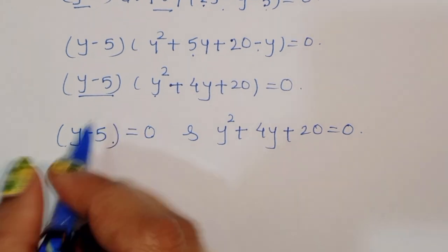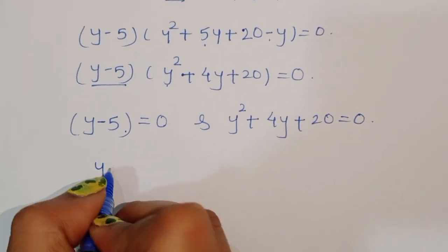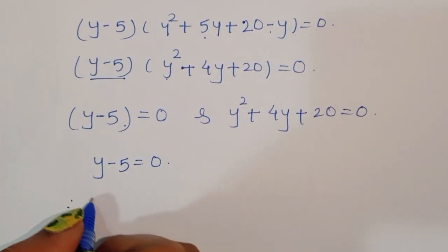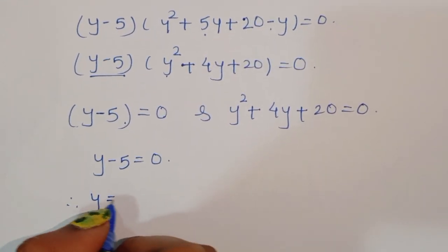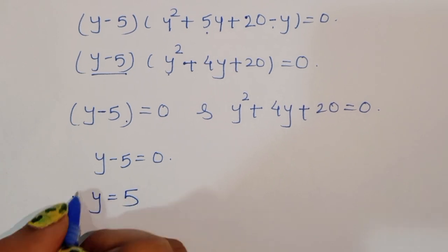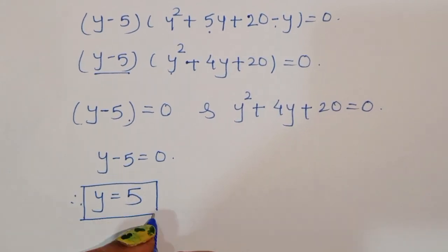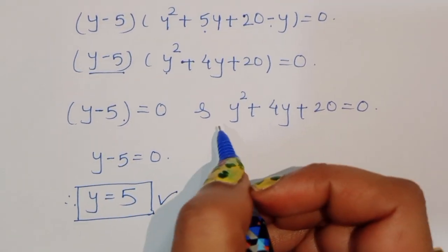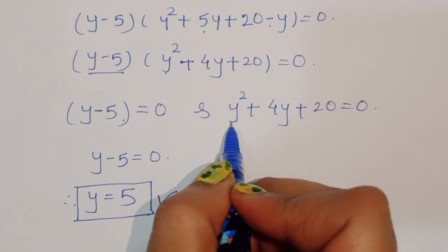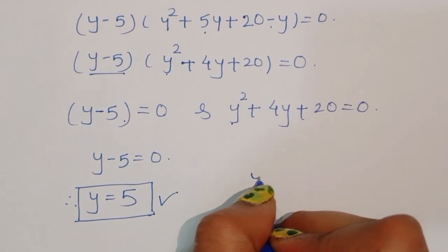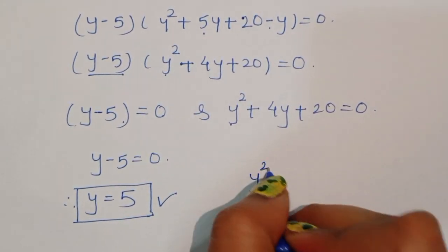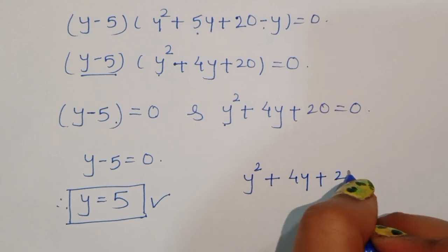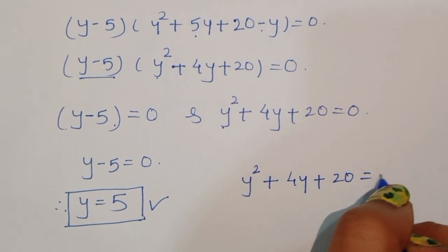Now y minus 5 equals 0 gives y equal to 5 — this is one solution. The next factor is y squared plus 4y plus 20 equals 0.